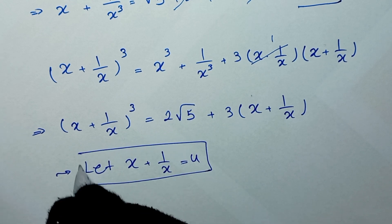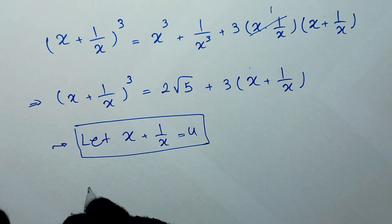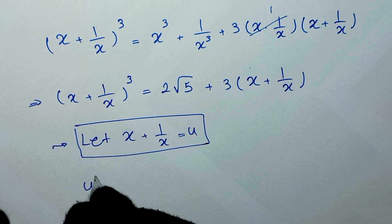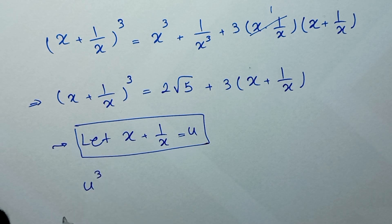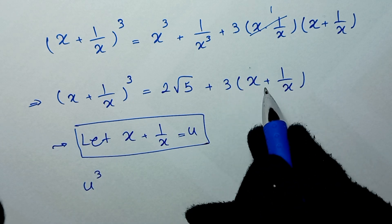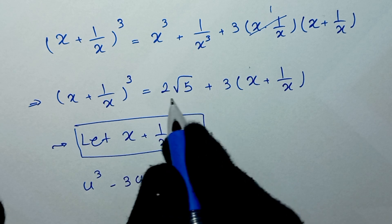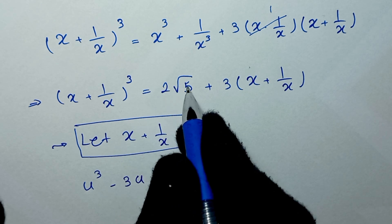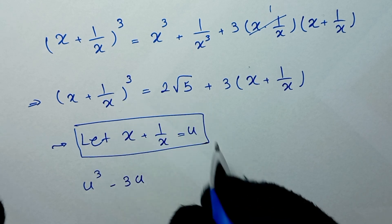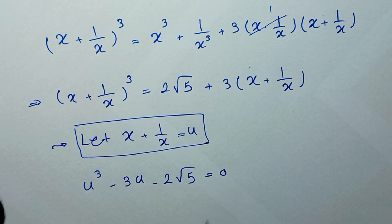Substituting, we write the equation as u cubed equals 2 square root of 5 plus 3u. Rearranging, we get u cubed minus 3u minus 2 square root of 5 equals 0.